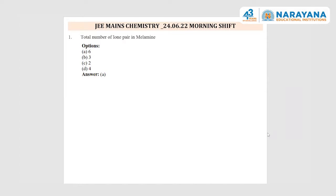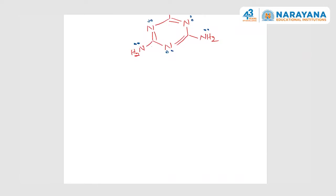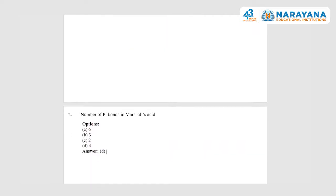First question: the total number of lone pairs in melamine. We need to know the structure of melamine, which is a heterocyclic aromatic compound. In the structure of melamine, we have six nitrogen atoms, and on each nitrogen we find a lone pair. So the total number of lone pairs present in the molecule of melamine is six, and hence option A is correct.